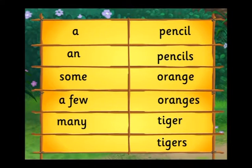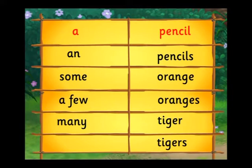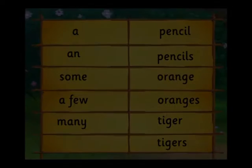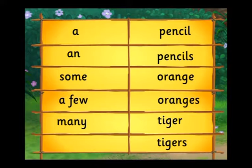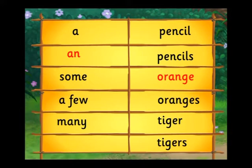Group A, you go first. A pencil. A tiger. Good. Group B, next. An orange. Good.